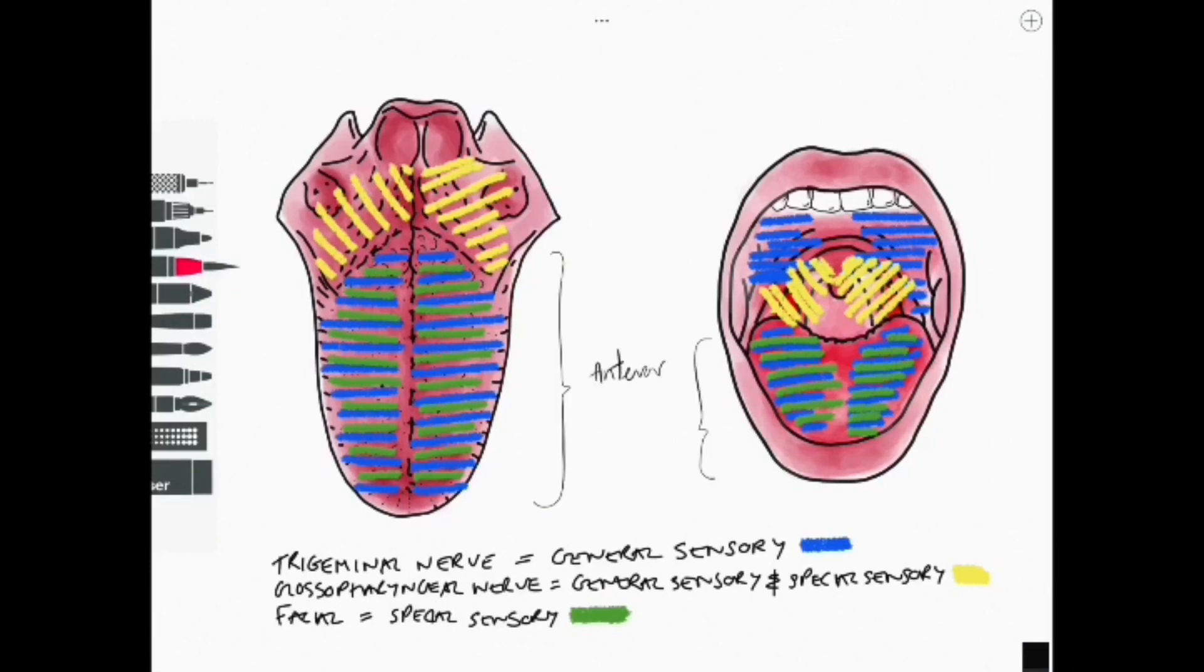So let's just have a look at what we're referring to here as being the anterior two thirds of the tongue and the posterior one third of the tongue.